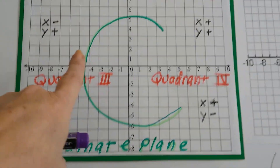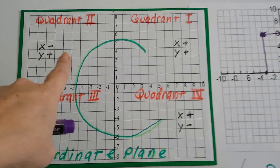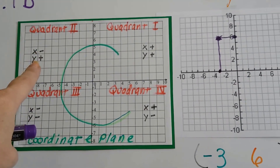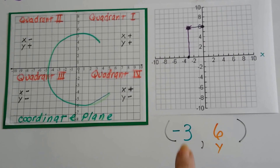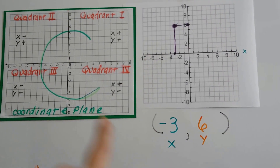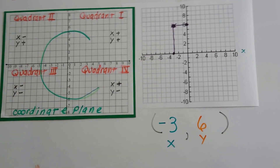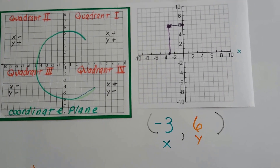They met in quadrant 2, where the x is negative and the y is positive. That's quadrant 2.